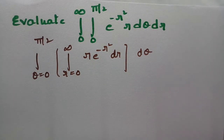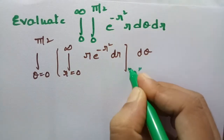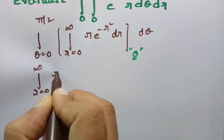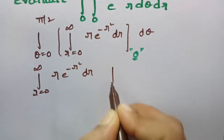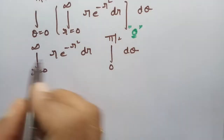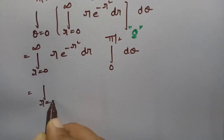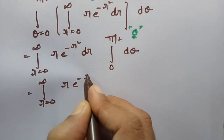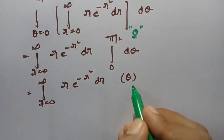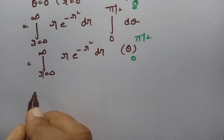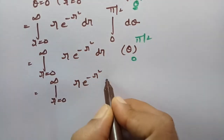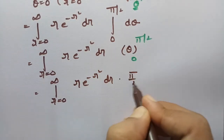First of all I will integrate with respect to theta. So if I integrate with respect to theta, the integral from r equal to 0 to infinity of r e to the power minus r squared dr, multiplied by the integral of d theta from 0 to pi by 2. For integral d theta is nothing but theta between the limits 0 to pi by 2. So this will be integral r equal to 0 to infinity, r e to the power minus r squared dr, times pi by 2.